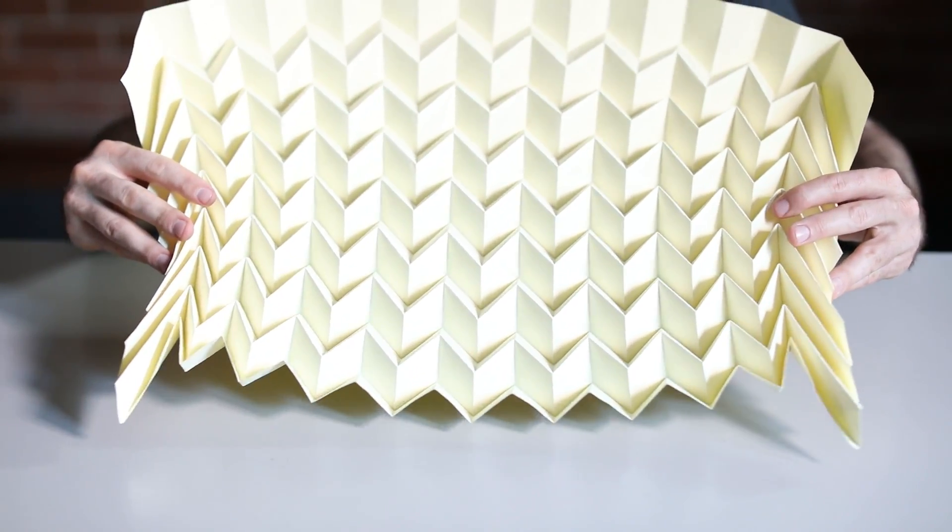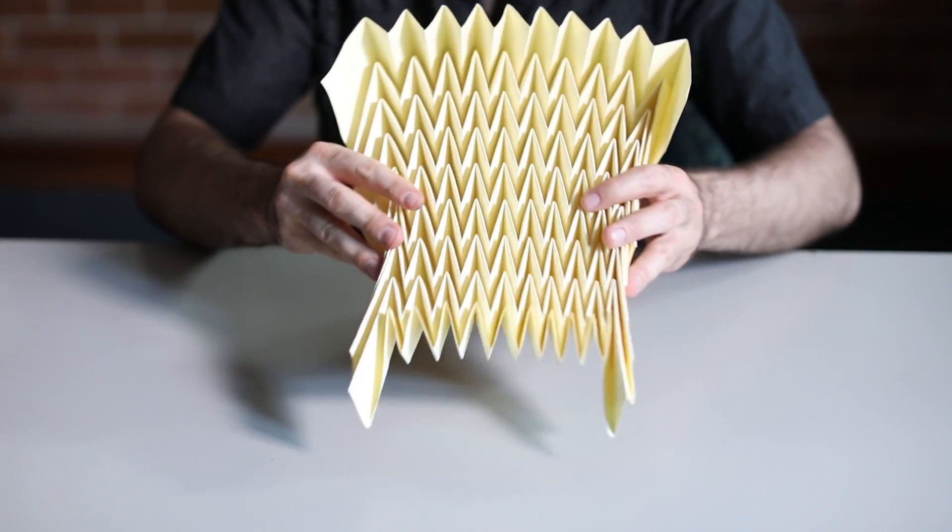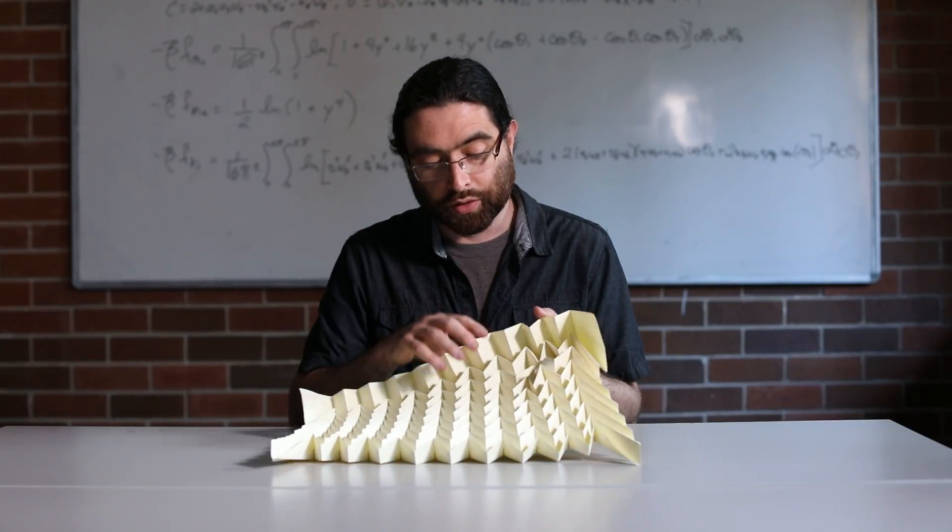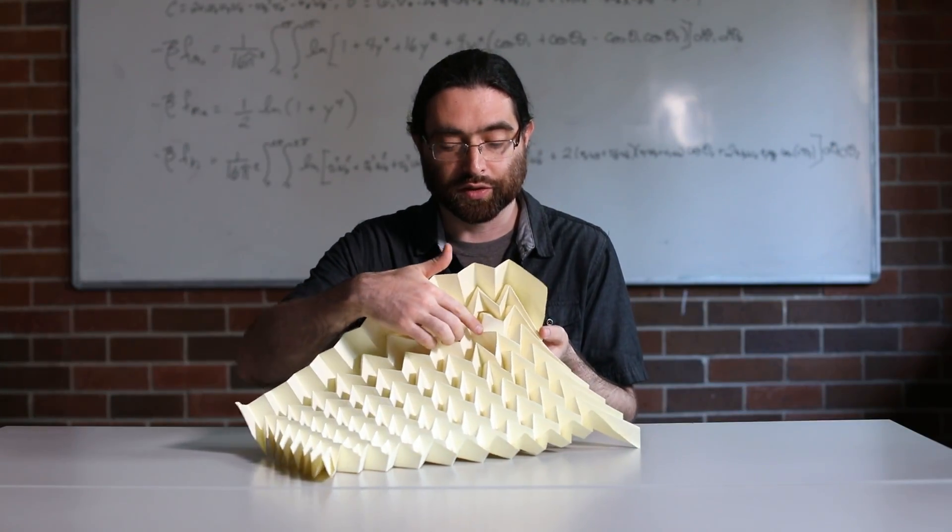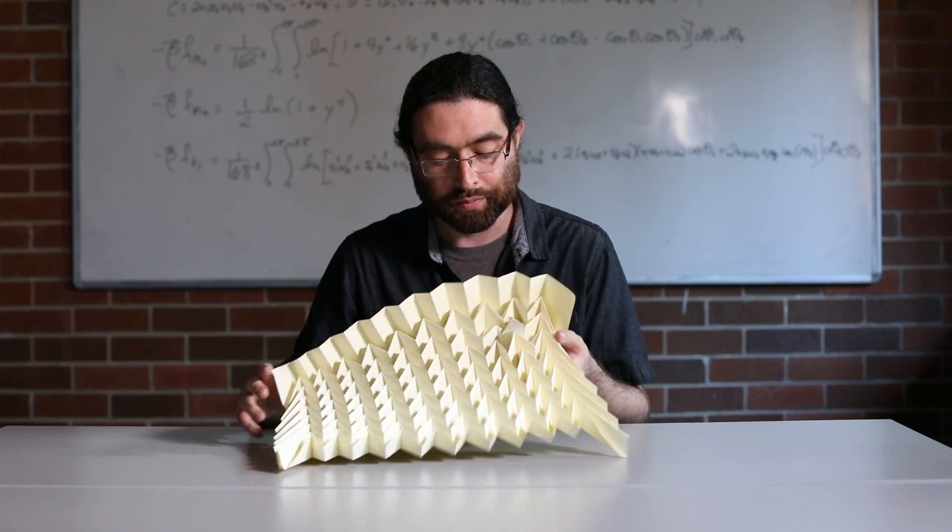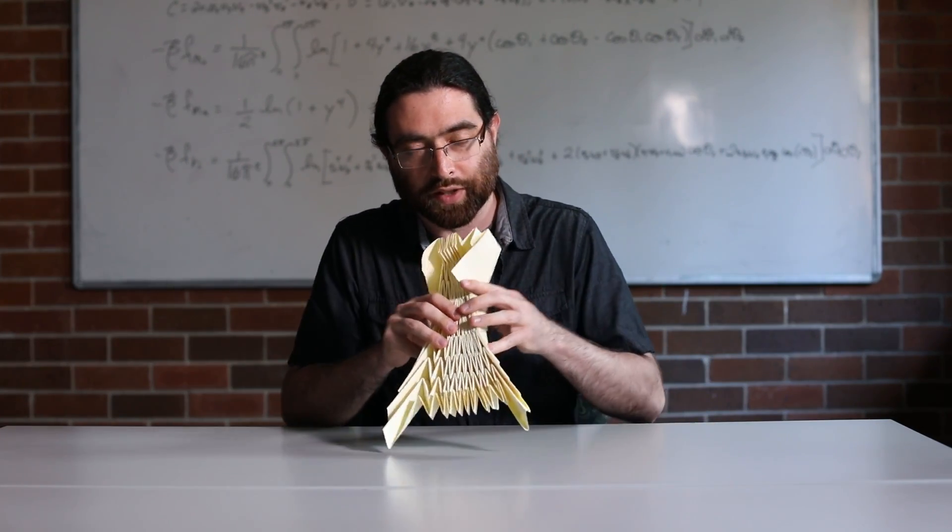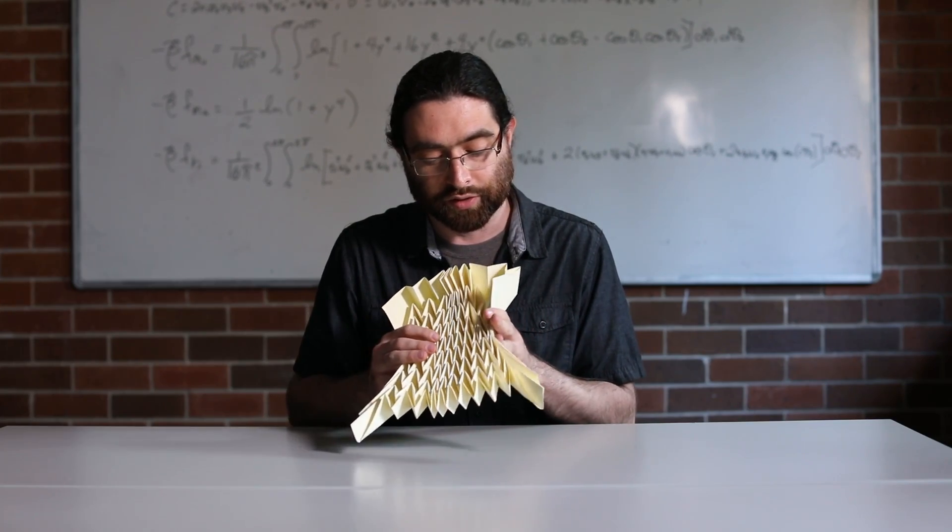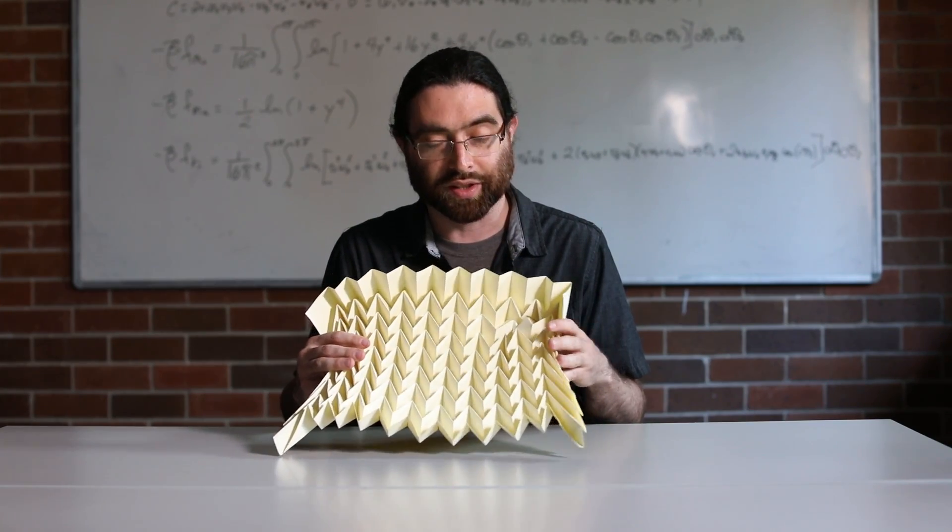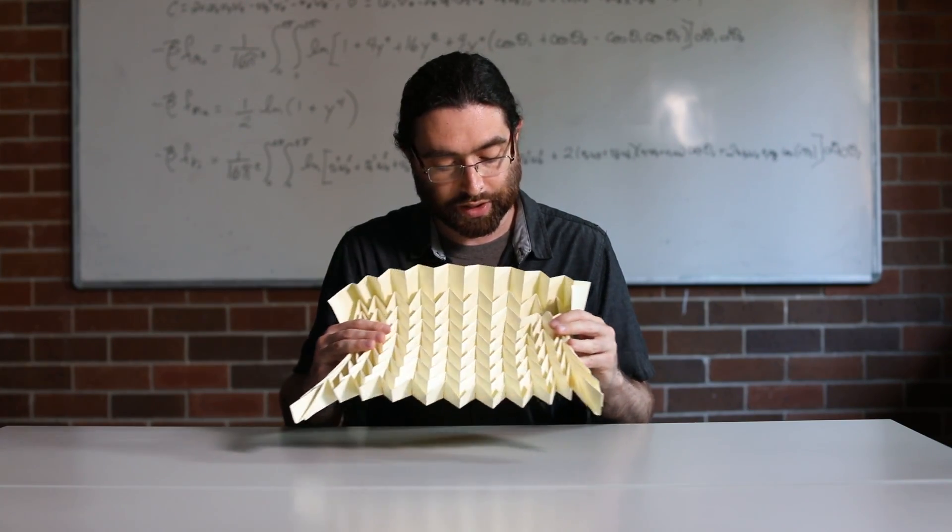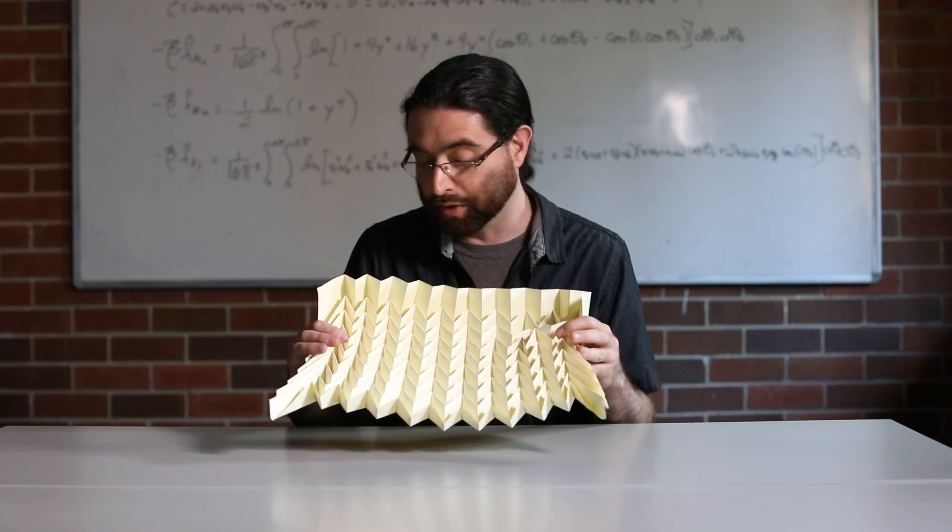So the pure Miura Ori compresses like so, but you can introduce defects. I've introduced a defect here in this corner, and in the area of the defect the paper is distorted a bit and it changes the compressibility properties of this pattern as a material.